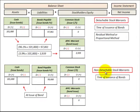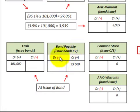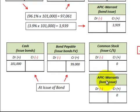With a non-detachable stock warrant, that's a bit different. Those are stock warrants that are attached to the bond and cannot be sold separate from the bond. When we issue these bonds, we have to include both the price of the bond and whatever that stock warrant is worth as a liability — it cannot be separated out as an equity portion.